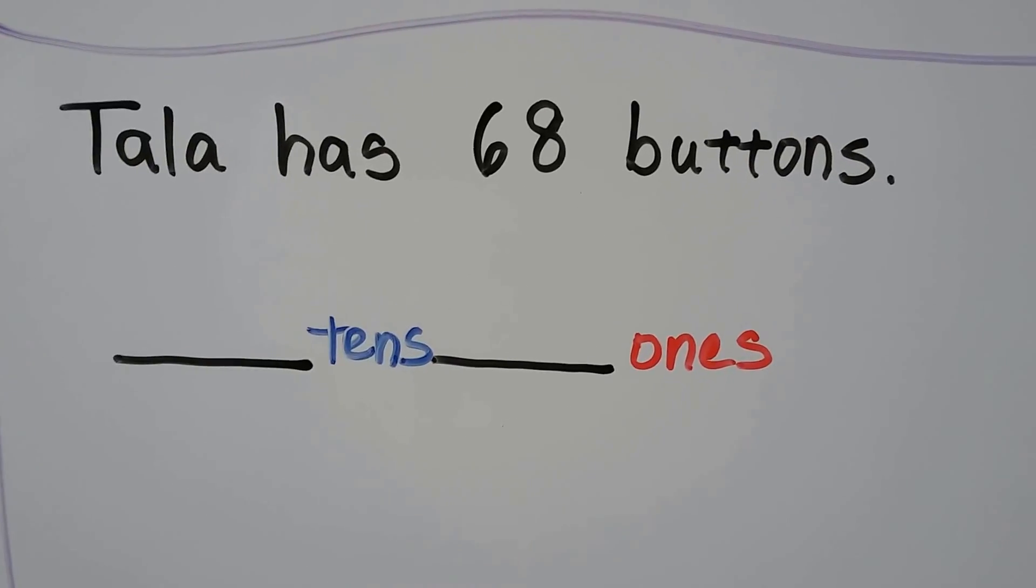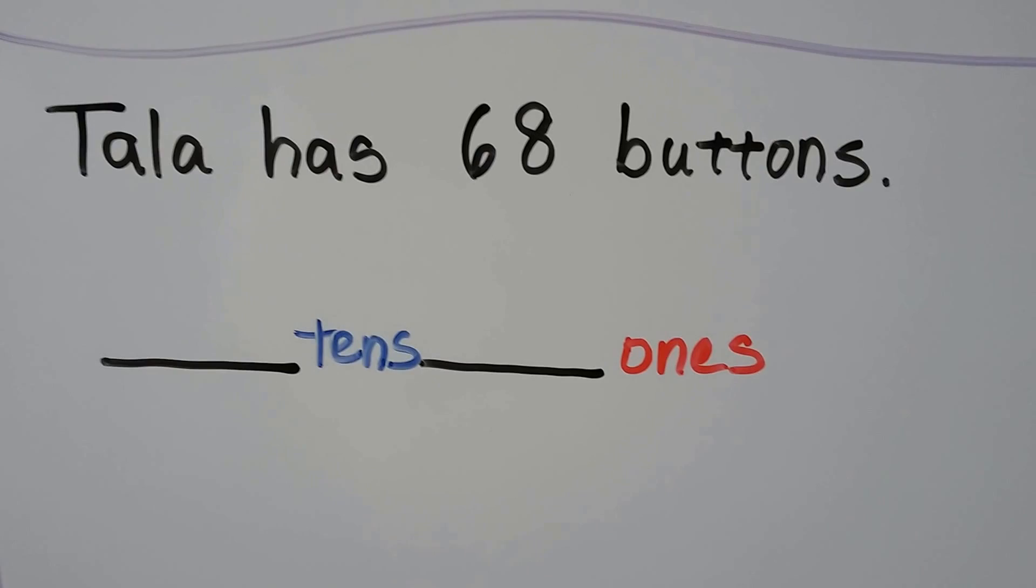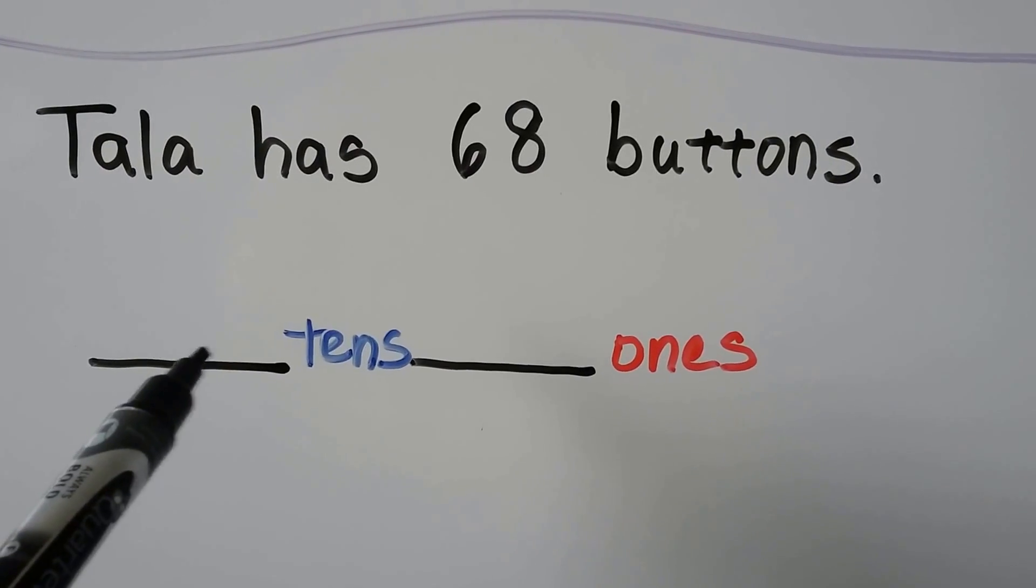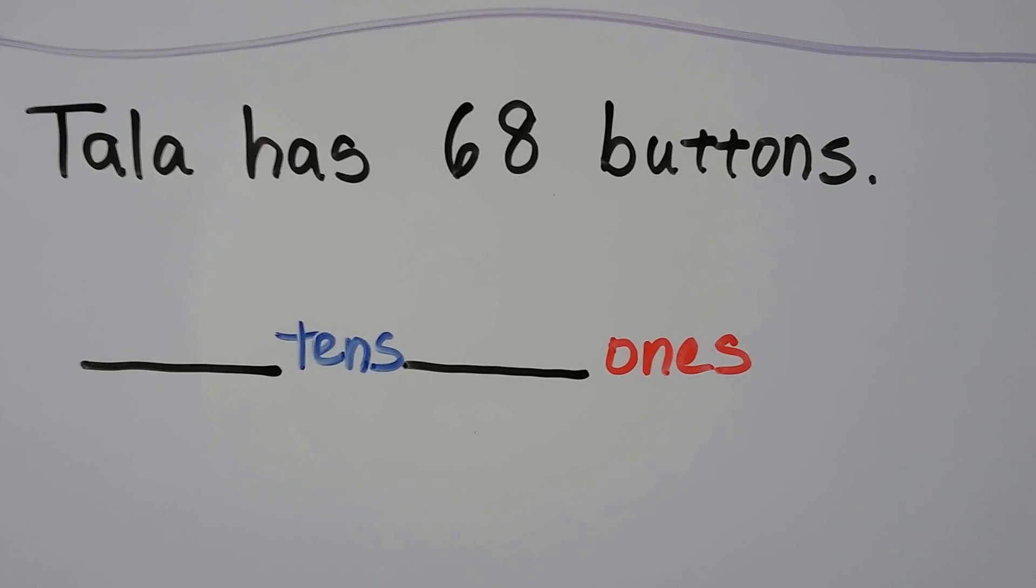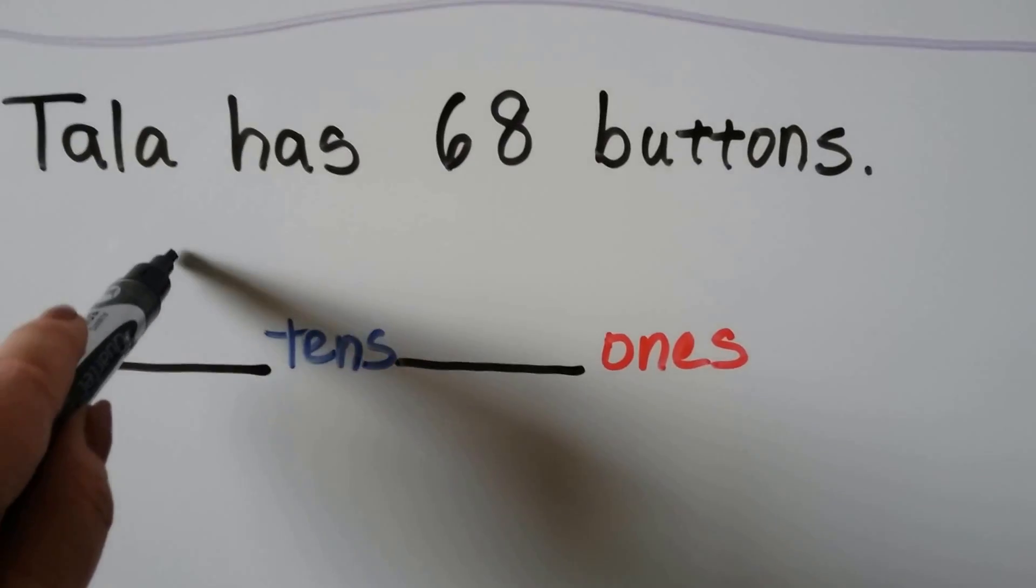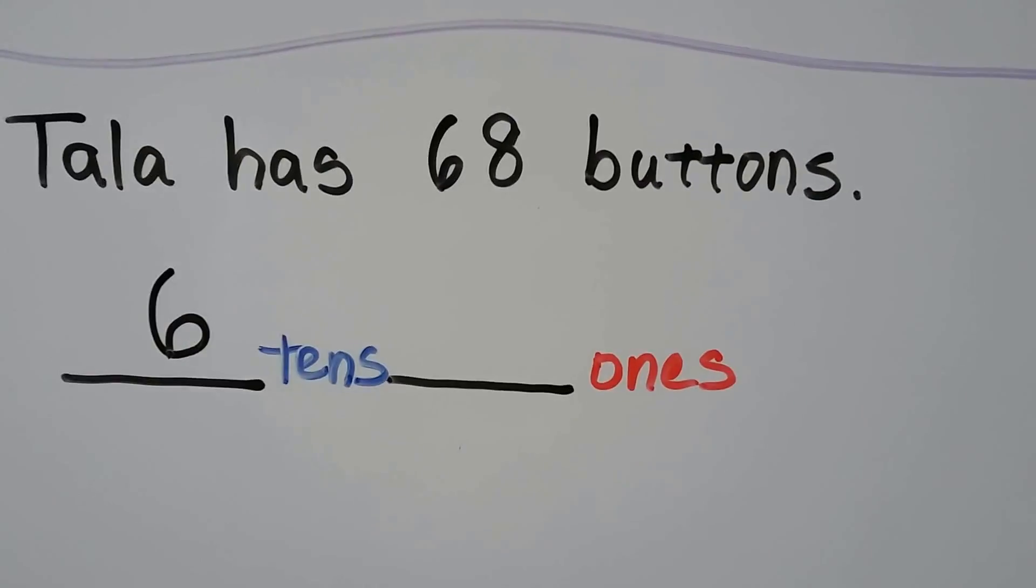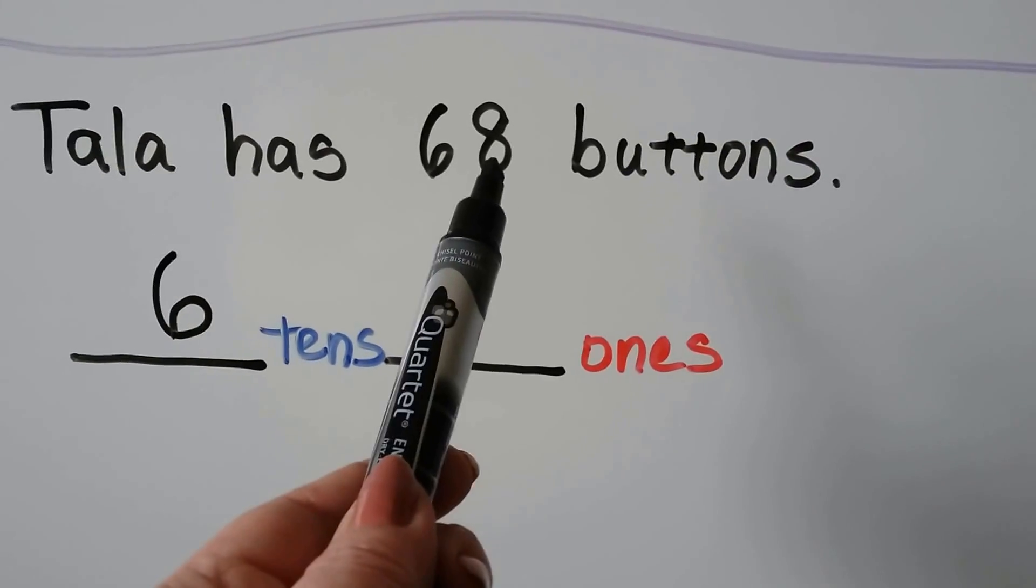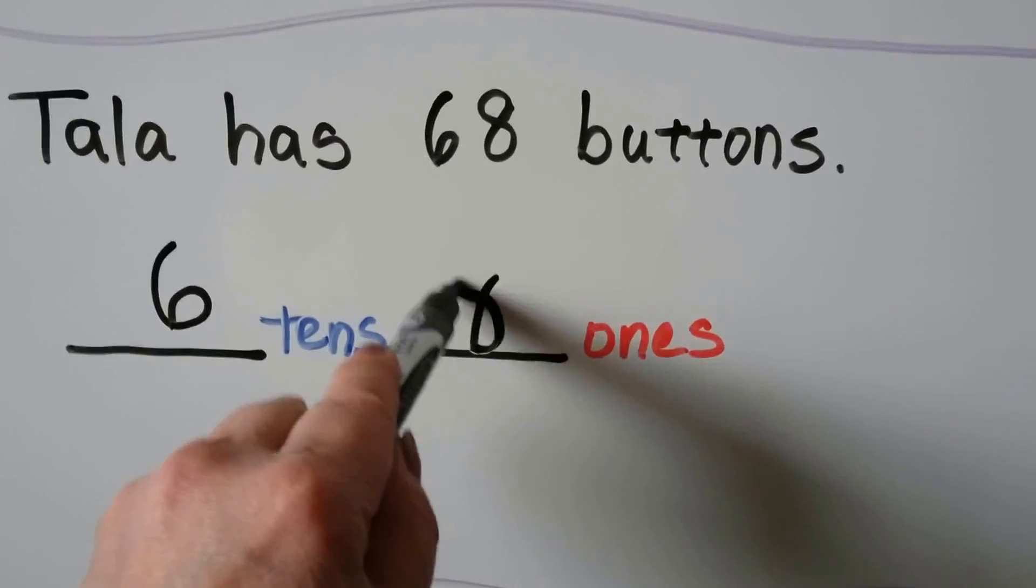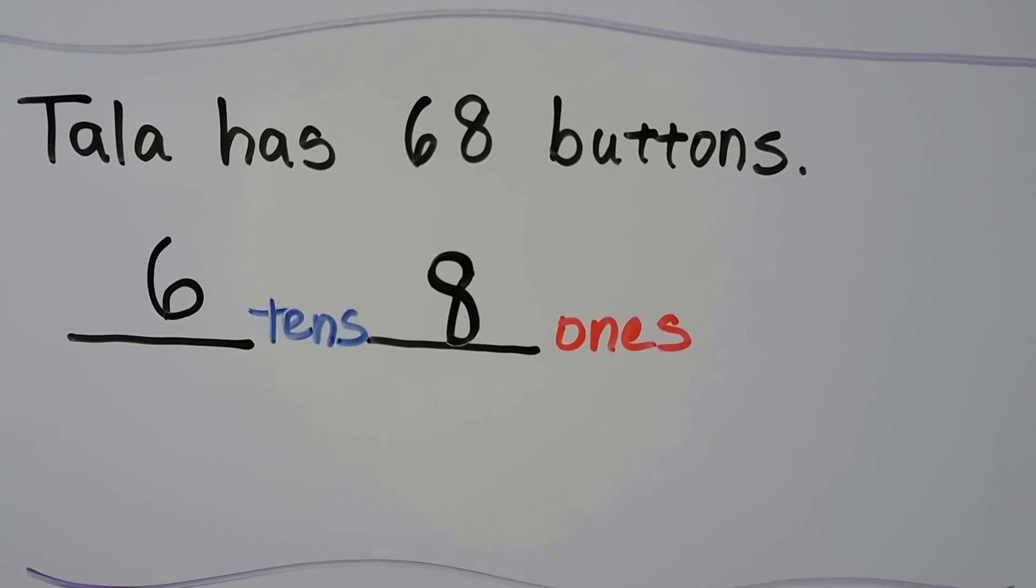Tala has 68 buttons. How many tens are in 68? There's 6 of them. How many ones are in 68? There's an 8 in the ones place. We have 6 tens and 8 ones.